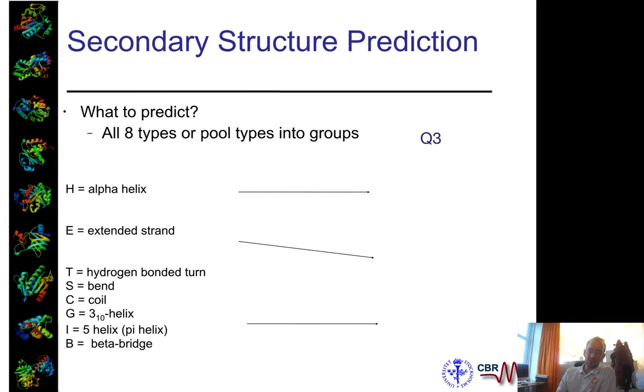STRIDE uses something slightly different. It uses alpha helices and puts all the 3-10 helices into something called a group. So normally when we talk about secondary structure prediction, you have to know exactly what you do, but it's normally three groups you have. And maybe you would like to expand it to eight. There are a few programs that do that.